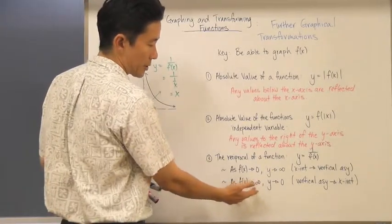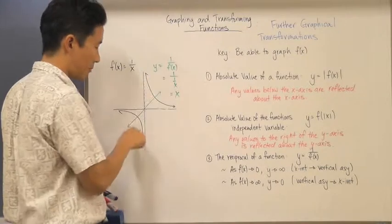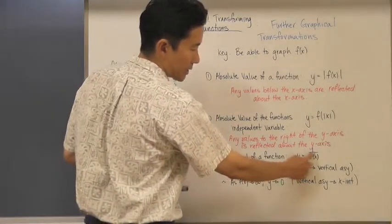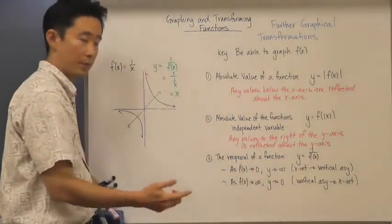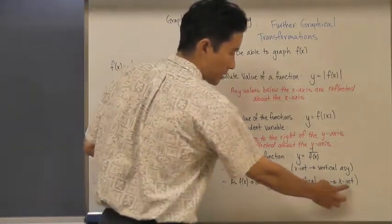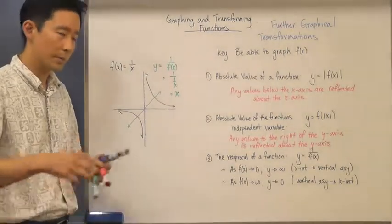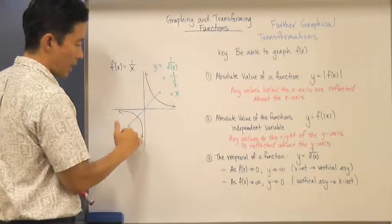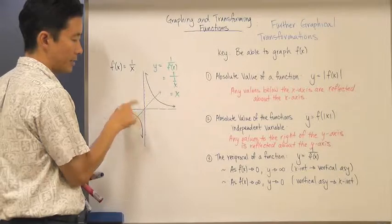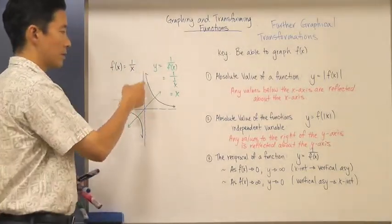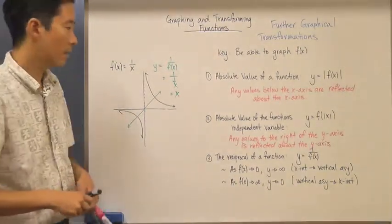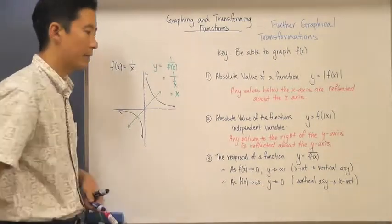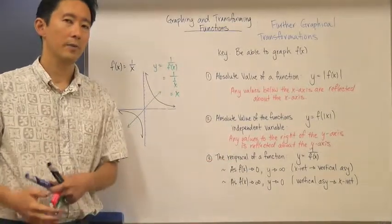As f of x approaches infinity - which it does approach infinity in certain regions - then y approaches zero. So 1 divided by a huge number is a very small number, basically zero. The vertical asymptotes of f of x actually become x-intercepts for the reciprocal function. So as f of x approaches infinity here and here, the reciprocal function has a zero or x-intercept at the origin, because the original function had a vertical asymptote there. We'll look more in-depth in class, as this one gives everyone the most difficulty.